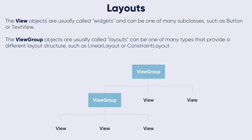These are called views, while the view group objects are usually called layouts, which can be one of many types providing different layout structures such as linear layout or constraint layout. The view group contains children like views and may contain other view groups that have their own children.